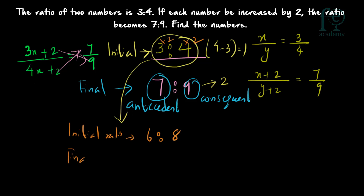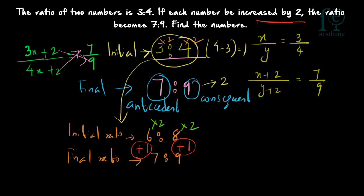Now compare: your initial ratio is 6 is to 8 and your final ratio is 7 is to 9. What is happening? 6 plus 1 gives 7 and 8 plus 1 gives 9. So plus 1 is the difference. This 1 difference is equivalent to 2 in the question — it is given each number is increased by 2. So your actual numbers will be 6 into 2 and 8 into 2, giving you 12 and 16.